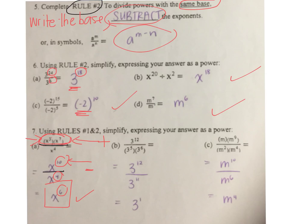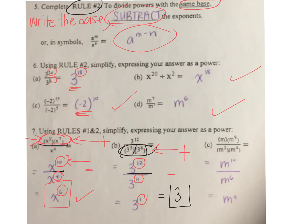For question B, simplify the denominator. 3 to the power of 5 times — remember, brackets mean multiplication. Add the exponents: 6 plus 5 is 11. Now subtract the exponents: 12 take away 11 is 1. Can you write the answer as just 3? Yes — either one is acceptable. 3 to the power of 1 is the same as just writing the number 3.